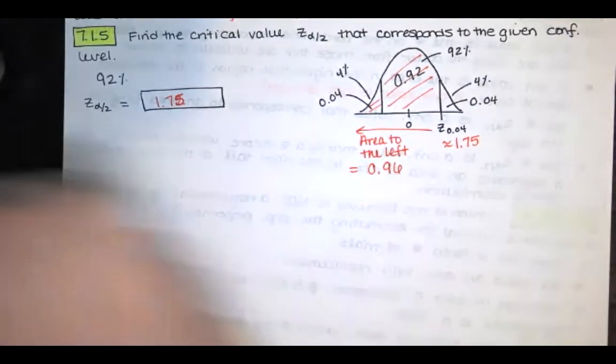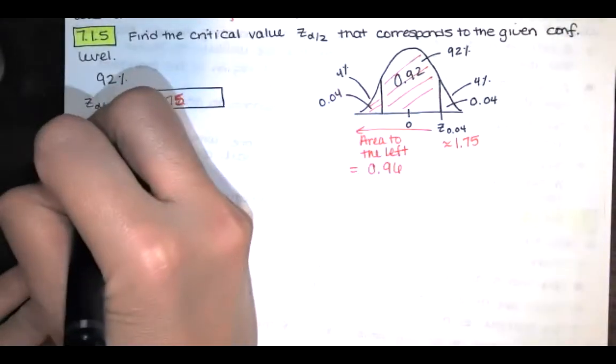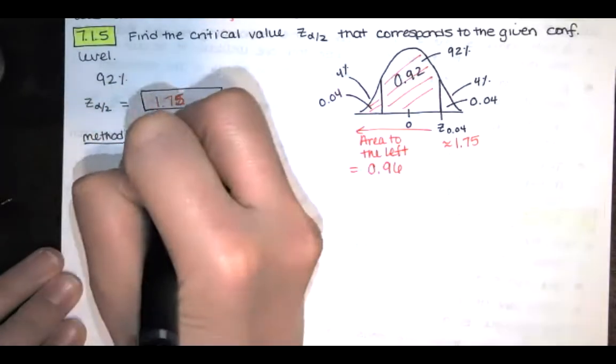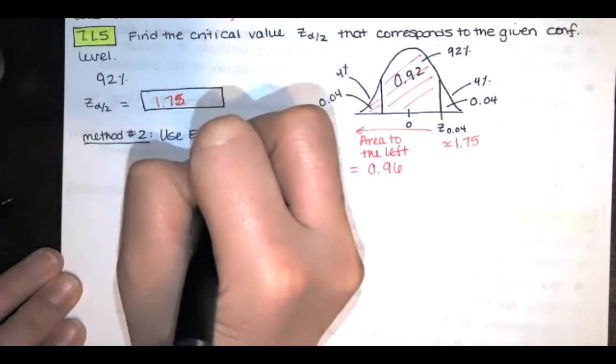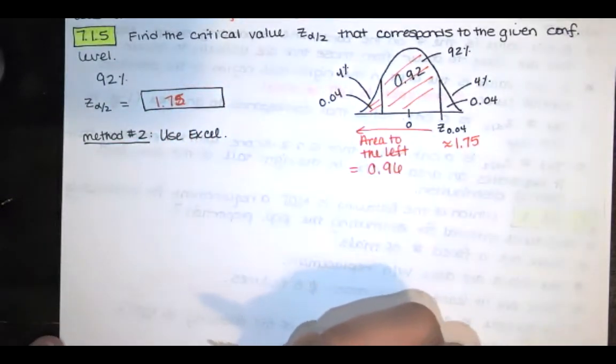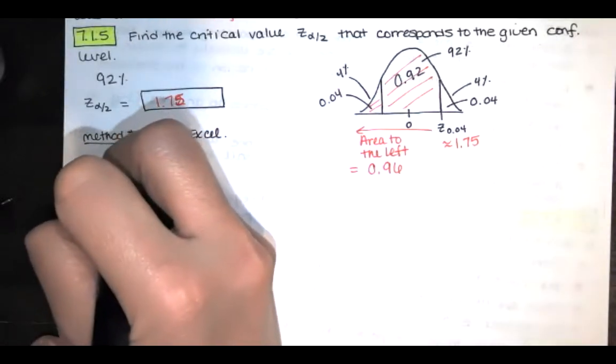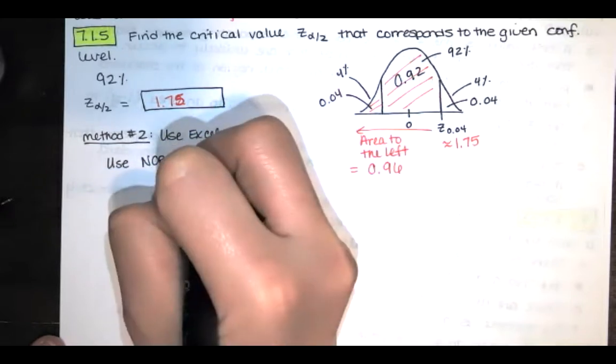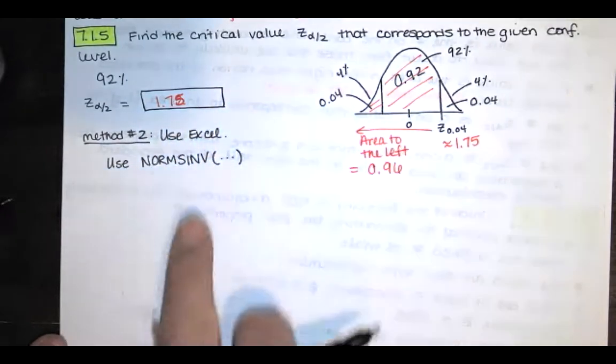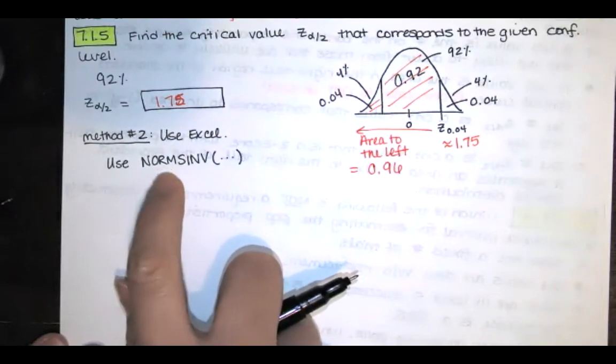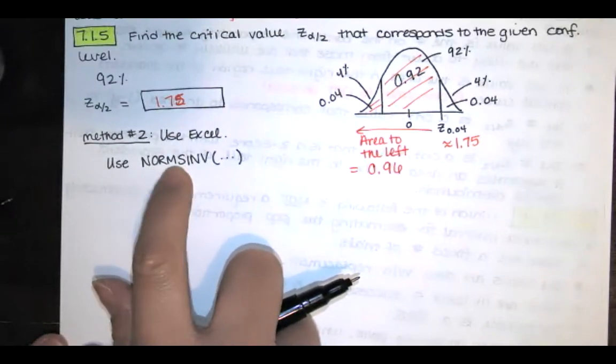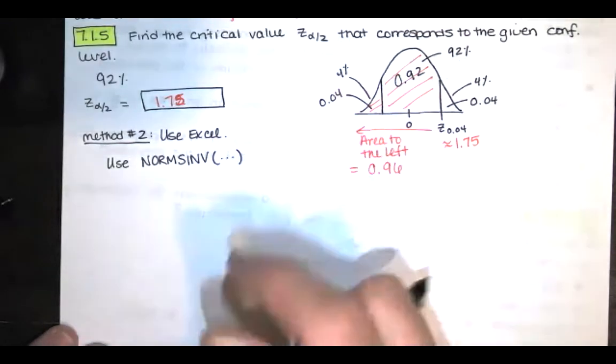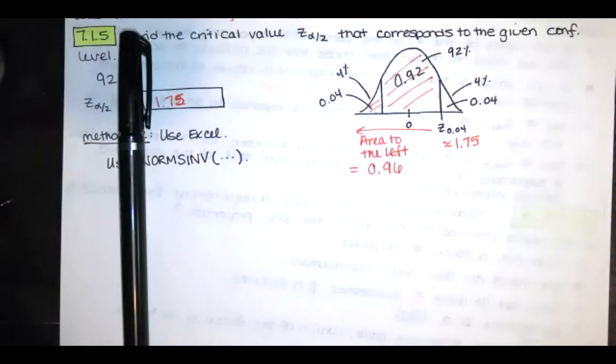And the function that we need here is the inverse norm function. And since we're interested in a standard normal distribution, we can use this version of it. So this is norm, S for standard, so standard normal distribution, and inverse. What you put in parentheses here is the probability or the area to the left. So let me show you how to do that in Excel now.